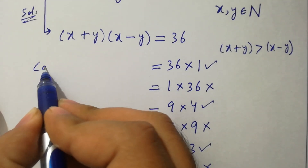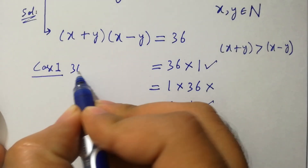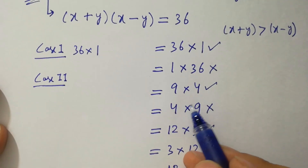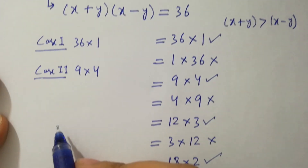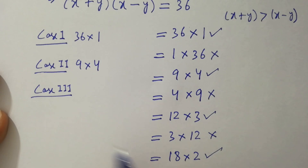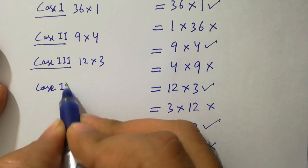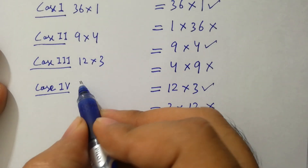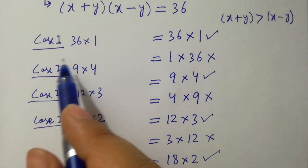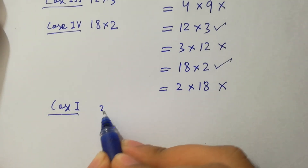Case 1 is 36 times 1. Case 2 is 9 times 4. Case 3 is 12 times 3. And case 4 is 18 times 2. Let's take these cases step by step. First case is 36 times 1.